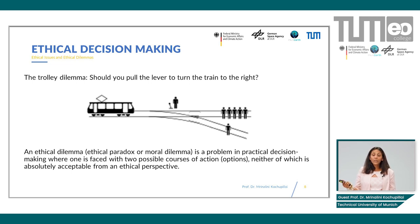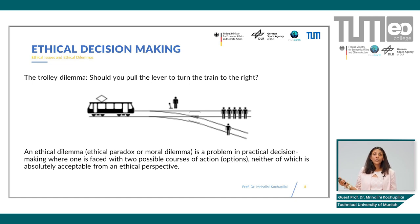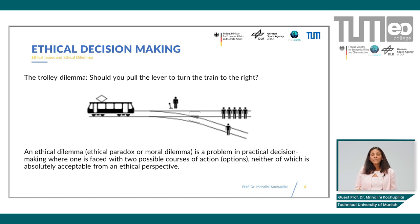But what if the four people there are extremely elderly and close to death, while the person on the right is a child who is just starting his life? Would you say the selection should be the same? Maybe there are different answers amongst yourselves. This is an interesting ethical dilemma called the trolley dilemma. Here we also come across a very interesting concept called ethical relativism.